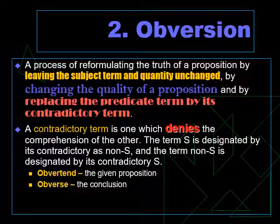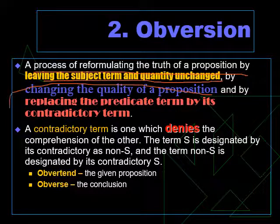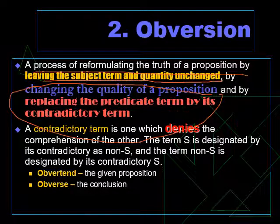Obversion is a process of reformulating the truth of a proposition by leaving the subject term and quantity unchanged. The subject term does not change — unlike in conversion where the subject term becomes the predicate. In obversion, there is no transfer of position. The subject term remains the subject, and the quantity stays the same. So if it was universal, it remains universal.